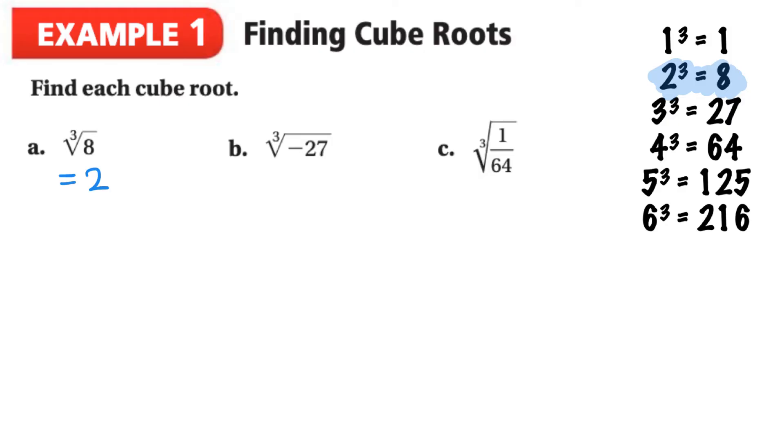For letter B we've got the cube root of negative 27. So again we can look at our chart, look for the number 27, here it is. 3 cubed is 27 but we've got a negative sign here. So for our answer we're going to have negative 3 instead. The reasoning behind this is if we have negative 3 multiplied by itself, we have a negative number multiplied by a negative number, which gives us a positive number. And if we take this positive number times this negative number, we're going to get a negative number. So that's why we have to do negative 3.